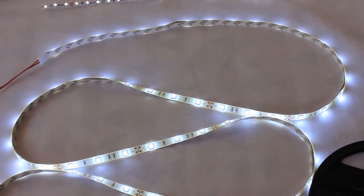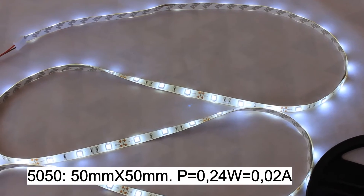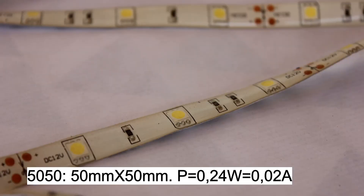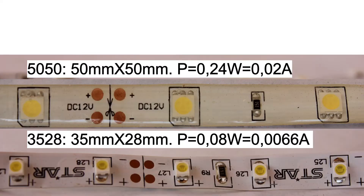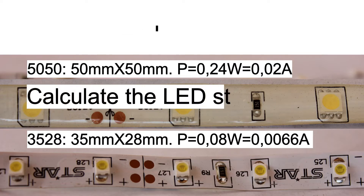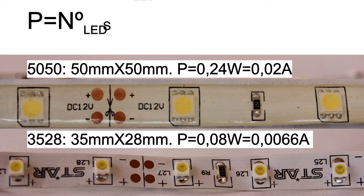In the 5050 type, the LEDs measure 50 by 50mm. They are square. Each LED consumes 0.24W or 0.02A. Now that you know how to identify the LED strip, the power calculation is very simple. You just have to multiply the number of LEDs by the power of each LED. You have two options.